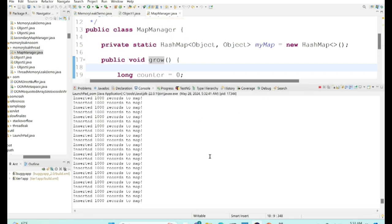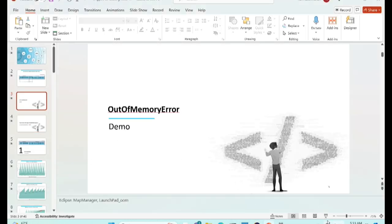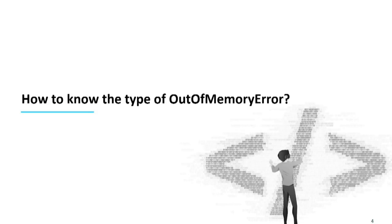I ran this program. It inserted thousands of records, and then — boom — I got this classic Java lang out-of-memory error. Now, how will I know what type of out-of-memory error I'm getting? The answer is: it's always printed in the out-of-memory error itself. We typically stop looking after the colon. Going forward, whenever we get an out-of-memory error, see what is after the colon space — that's where the type is printed.